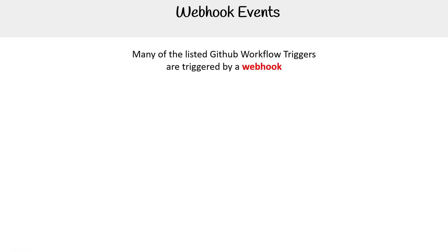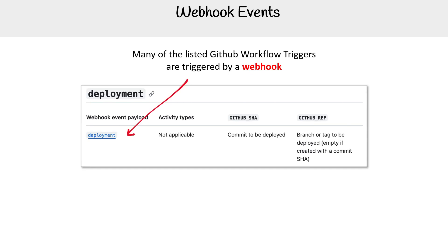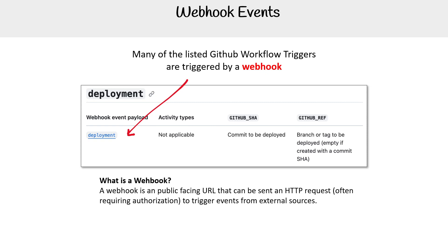This is Andrew Brown. Let's talk about webhook events. So many of the listed GitHub workflow triggers are from a webhook, because if you look at it, they show this webhook event payload, indicating that it is coming from the API. Basically, what's happening is that particular API calls are triggering these webhooks.